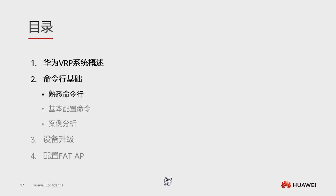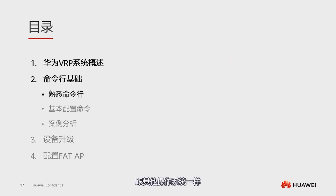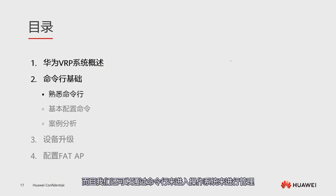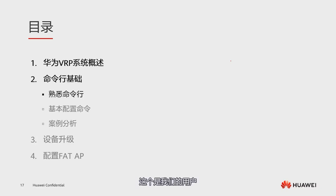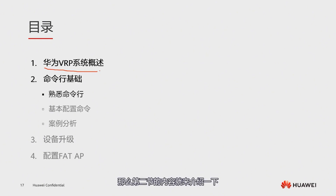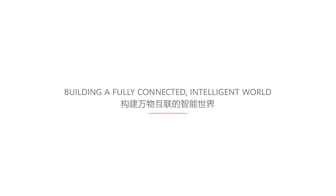That concludes our first section. VRP is one of our operating systems — similar to other operating systems, we have a file system and various management methods: web interface management and command line management. We also talked about users of the operating system who have different user levels (0 to 15) and command levels (0 to 3). Now that we have successfully logged into the VRP system through the CLI, the next section will introduce how to use the command line interface of the VRP system.